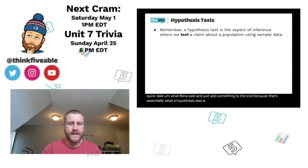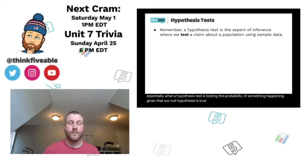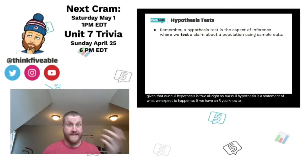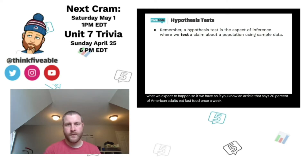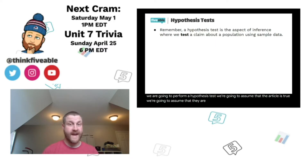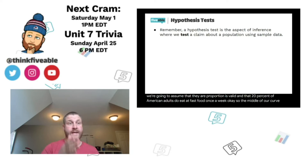When testing a claim about a population using sample data, we are testing the probability of something happening given that our null hypothesis is true. The null hypothesis is a statement of what we expect to happen. For example, if an article says 20 percent of American adults eat fast food once a week, and our sample doesn't line up with that, we perform a hypothesis test, assuming the article is true and that 20 percent is valid. The middle of our curve is 20 percent.